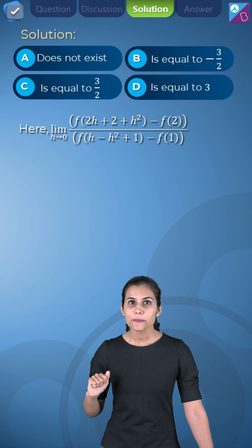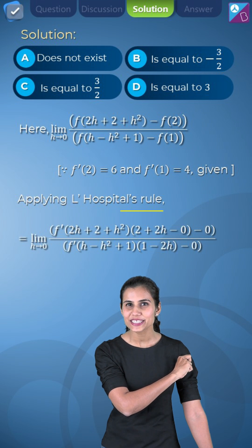Doing so, we will end up getting 0 by 0, which is an indeterminate form. So L'Hospital's rule will come to the rescue.